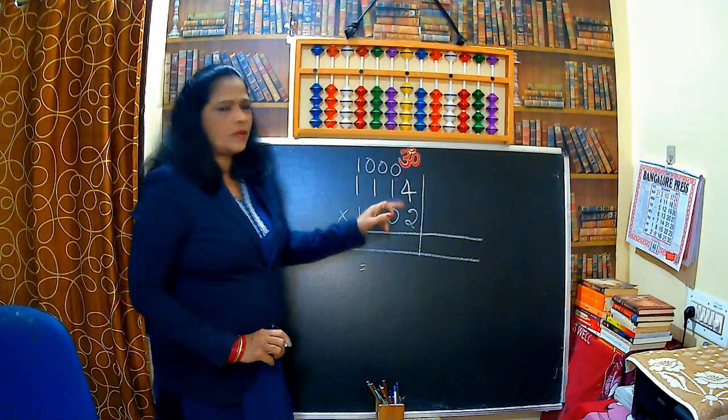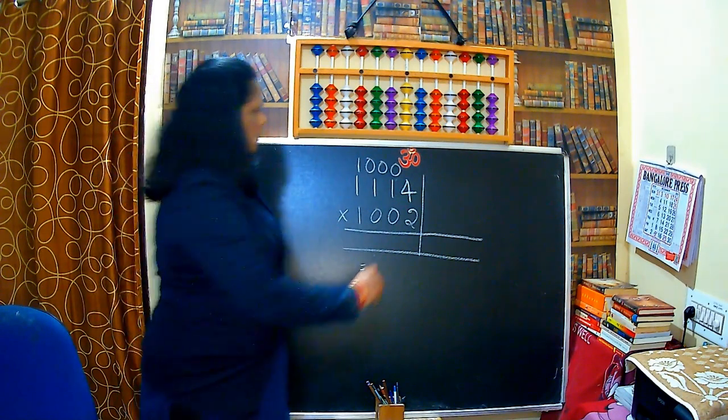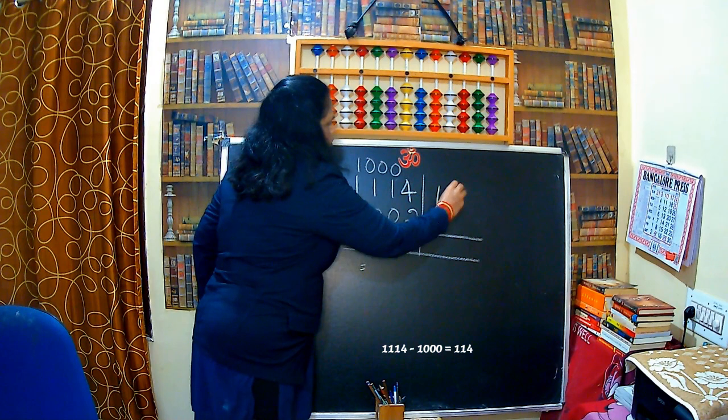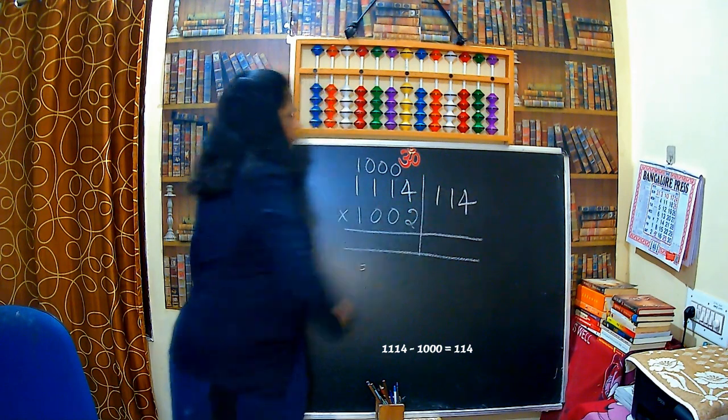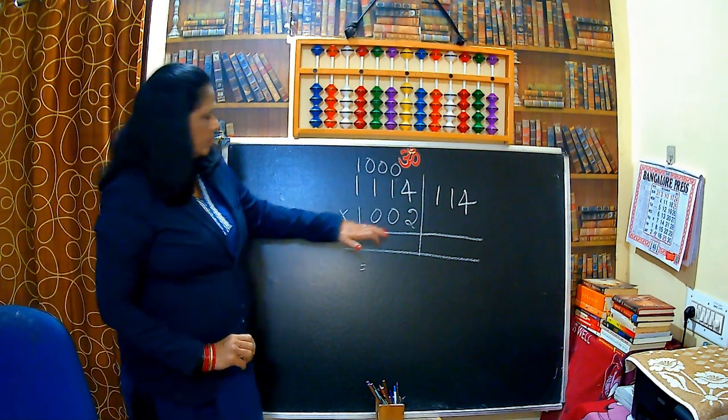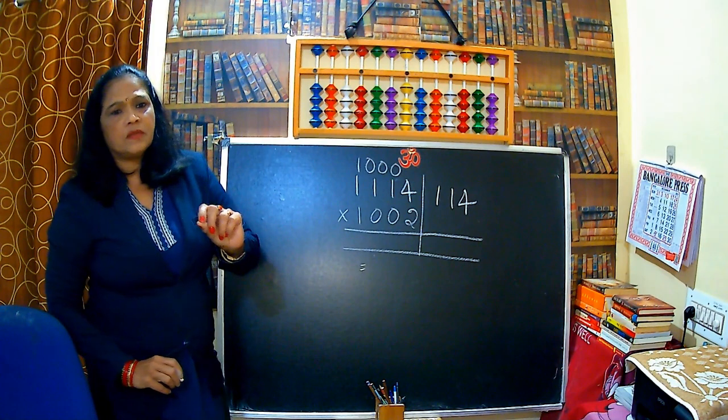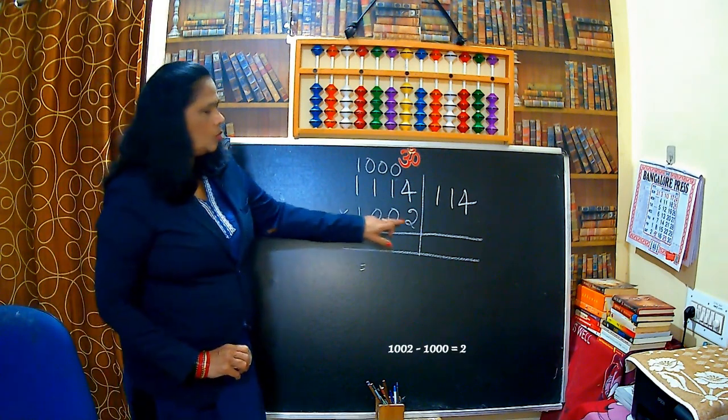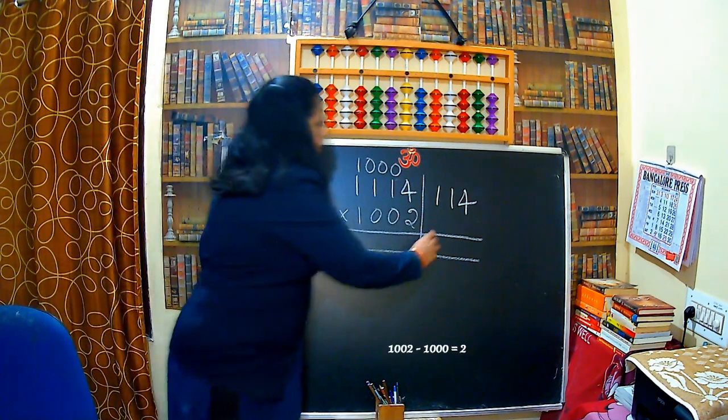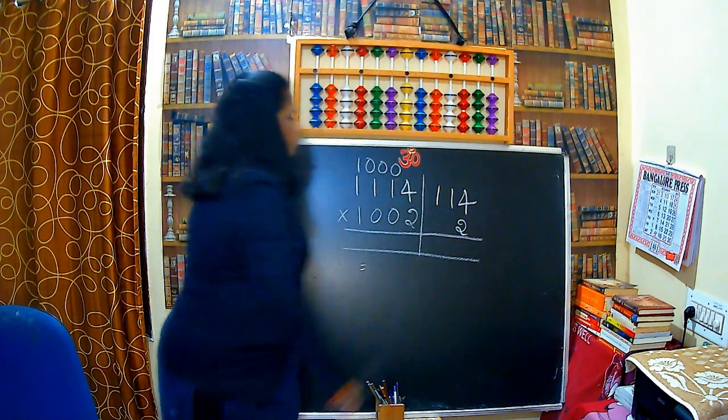So the next step is subtract the given number with the base. So that is 1114 minus 1000. That is 114. Write it in the right hand side. And 1002 minus base thousand, 1002 minus thousand is only 2.